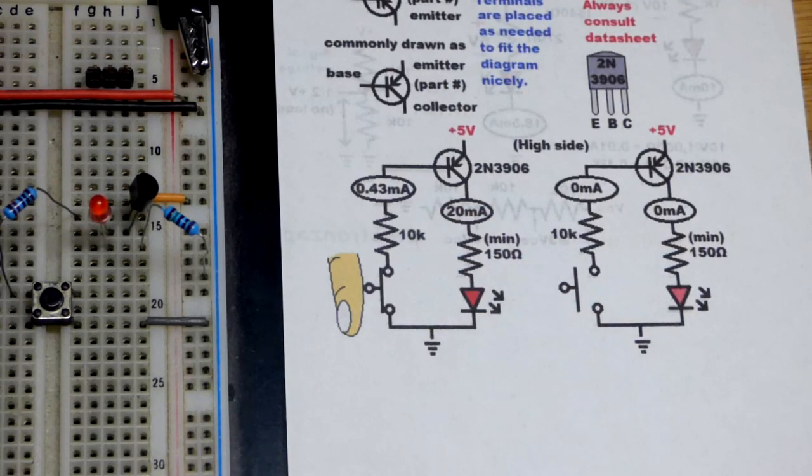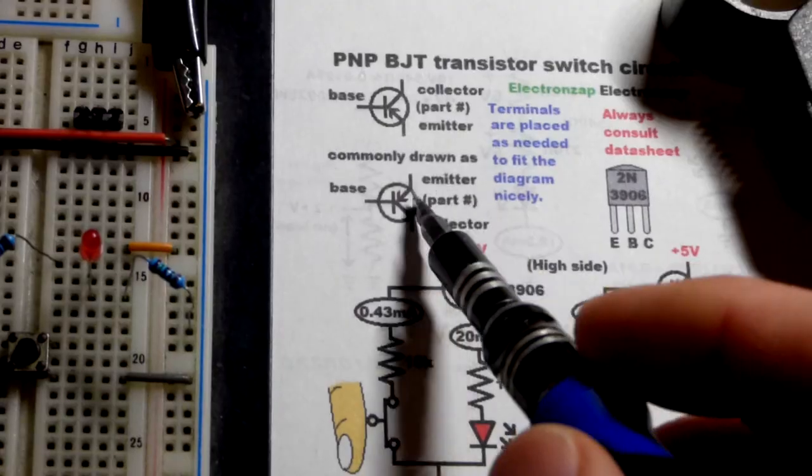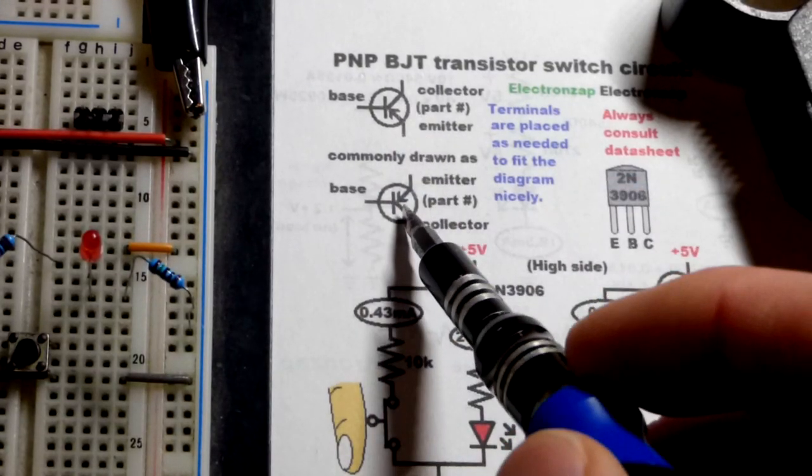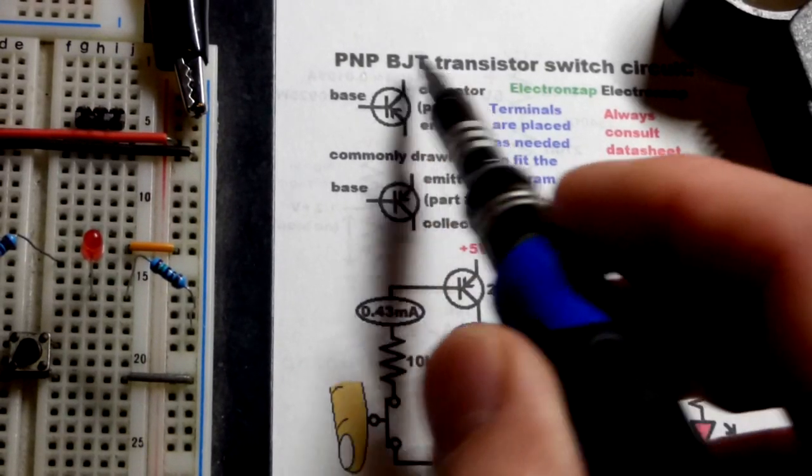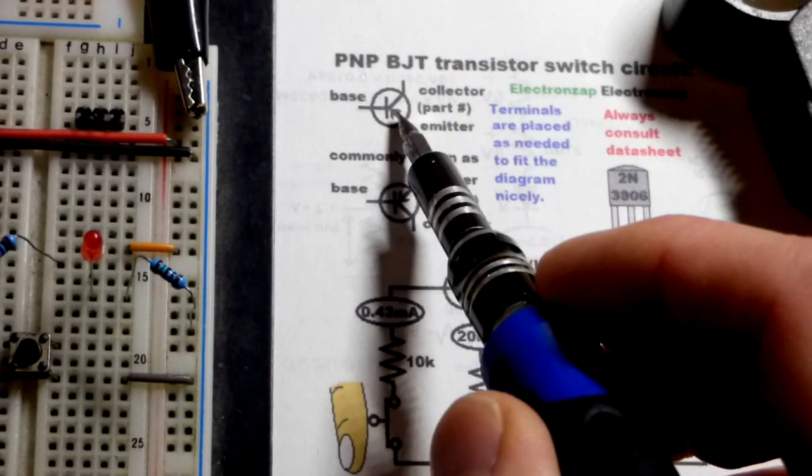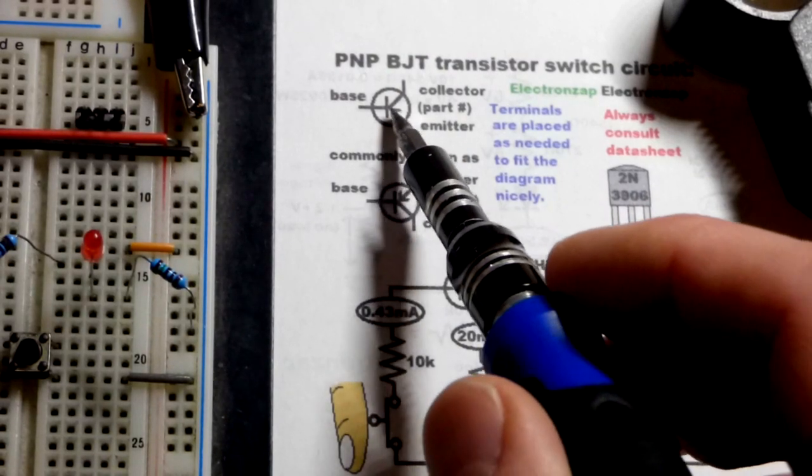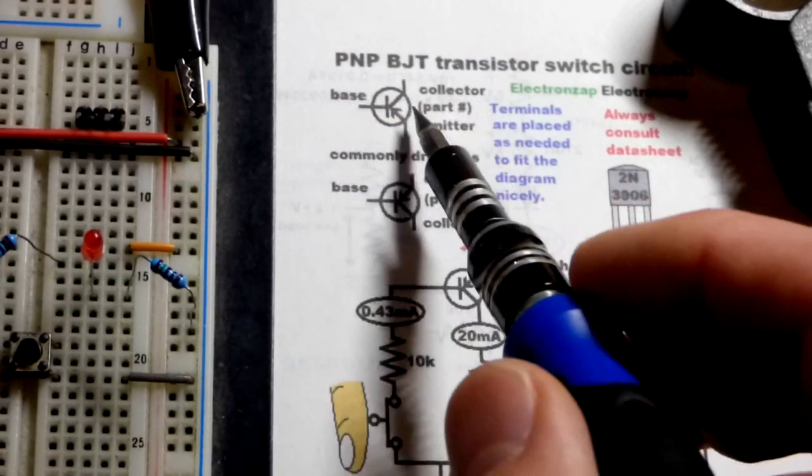Now here's the schematic diagram for the PNP bipolar junction transistor. We got collector, base, emitter. The main thing is that the emitter for the PNP is pointing in right there, and usually the schematic doesn't have the names of the pins.